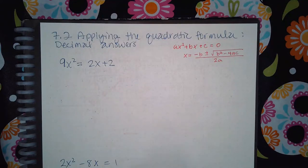I have 7.2 applying the quadratic formula for decimal answers. I still have to have it equal to zero before I can apply the quadratic formula. In my first example it is not equal to zero, so I do have to move some terms over to make it equal to zero.